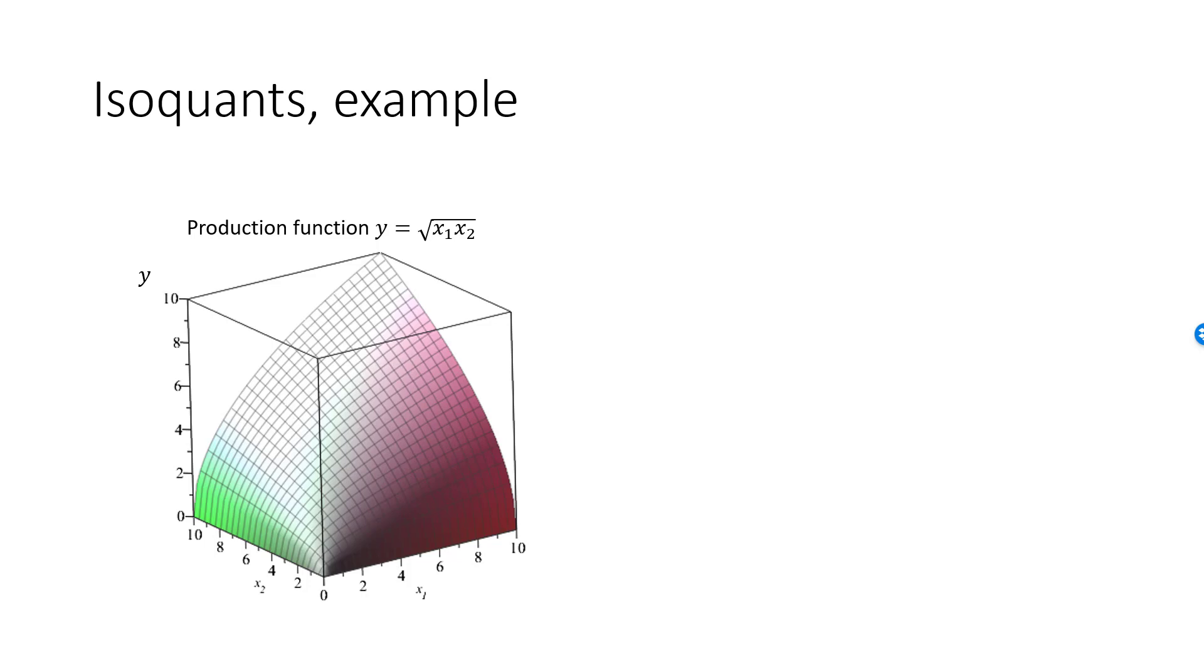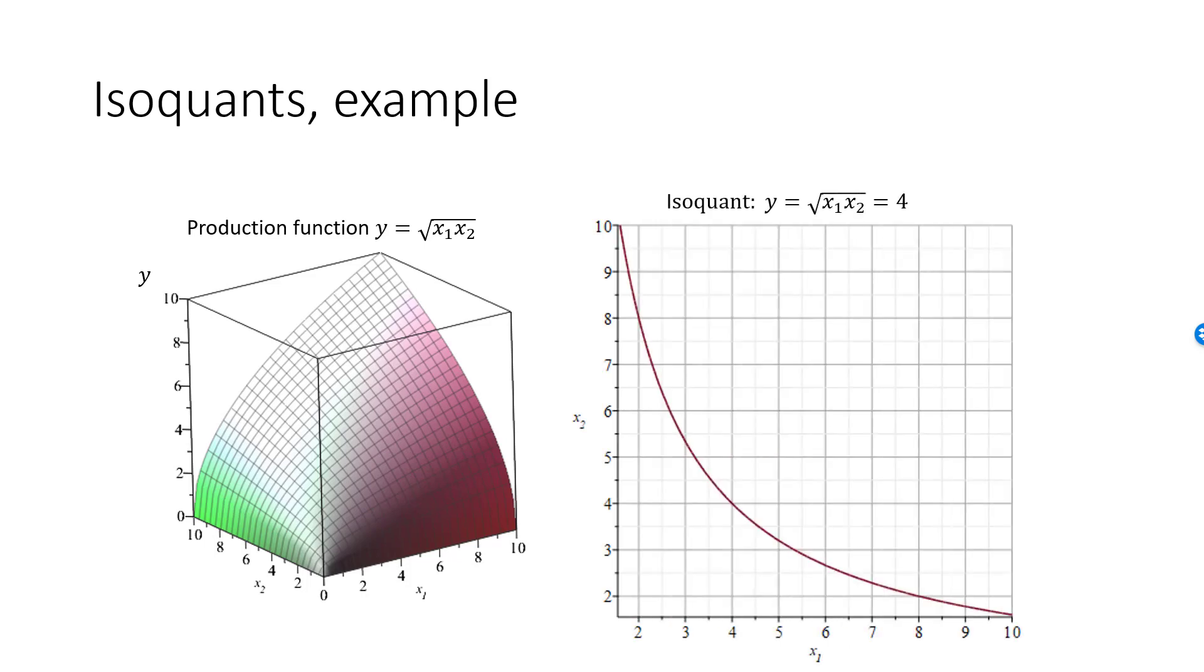For example, the bundle 10 comma 1.6 belongs to this isoquant, since the square root of 10 times 1.6 is precisely 4. There are, of course, many other factor bundles that belong to this particular isoquant. Here is a graph of all of them. Pick any point on this graph and the square root of x1 times x2 will be 4.